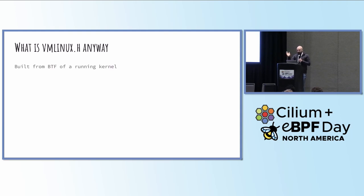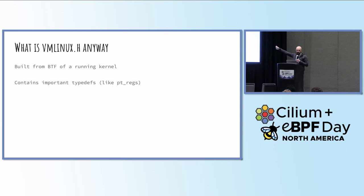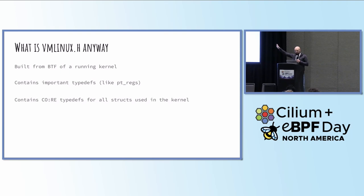vmlinux.h, built from the BTF of the running kernel, contains important type definitions for things like pt_regs for the CPU registers on the target system — useful if you're working with trace points, kprobes, and things like that — and CO-RE type definitions for all the structures in the kernel. So if you want to use task_struct or something, it's going to be there. You don't need to write your own.